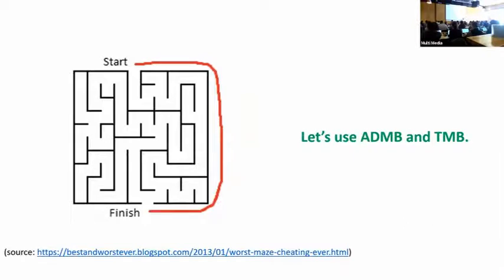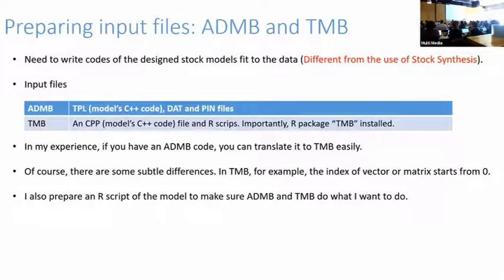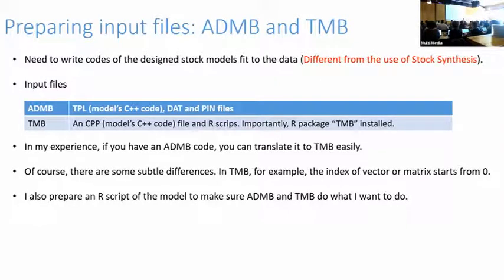Now let's use AD&B and TMB. AD&B and TMB are different in that here I used a model we developed for the FRDC project. I had AD&B code written by myself, and once you have AD&B code, you can easily translate it into TMB. One thing to be aware of is the TMB user system compared to AD&B. I also have an R script to verify that both AD&B and TMB are doing the right thing — that's how I check whether my code is correct.